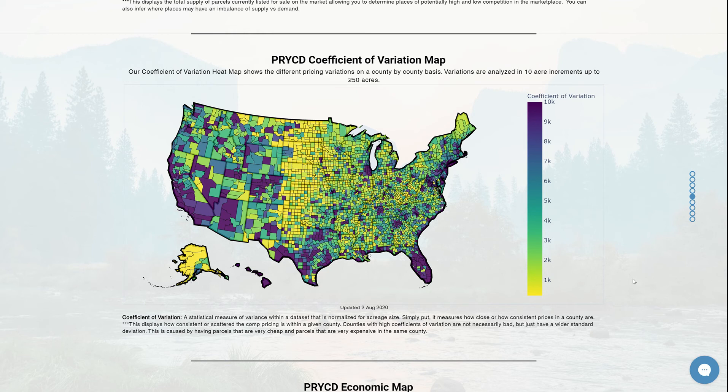The higher the coefficient of variation, the higher the price comp variation is going to be in that county. And the lower the coefficient of variation, the lower the price comp variation is going to be in that county.